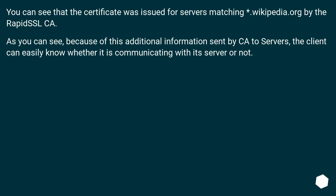As you can see, because of this additional information sent by the CA to servers, the client can easily know whether it is communicating with the intended server or not.